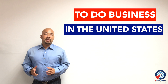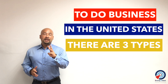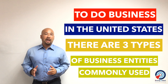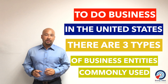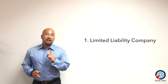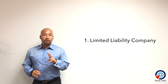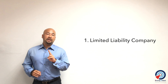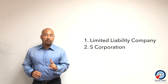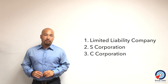To do business in the United States, there are three types of business entities that are commonly used. One, it's a limited liability company. Two, is a decision between an S corporation or a C corporation.